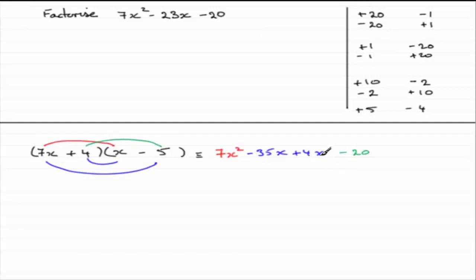As I've said before, if we were to switch the signs, instead of getting minus 31x, all that would happen is we'd get plus 31x. So, it's no good switching the signs. We haven't got our target number in the middle of a 23.